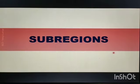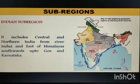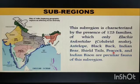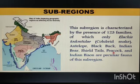The first sub-region of the Oriental Region is the Indian Sub-region. It includes central and northern India from the River Indus and the foot of the Himalayas southward up to Goa and Karnataka. This sub-region is characterized by the presence of 123 families, of which only the colubrid snake, blackbuck antelope, Indian bear, slow lorises, peacock, and Indian bison are peculiar fauna of this region.